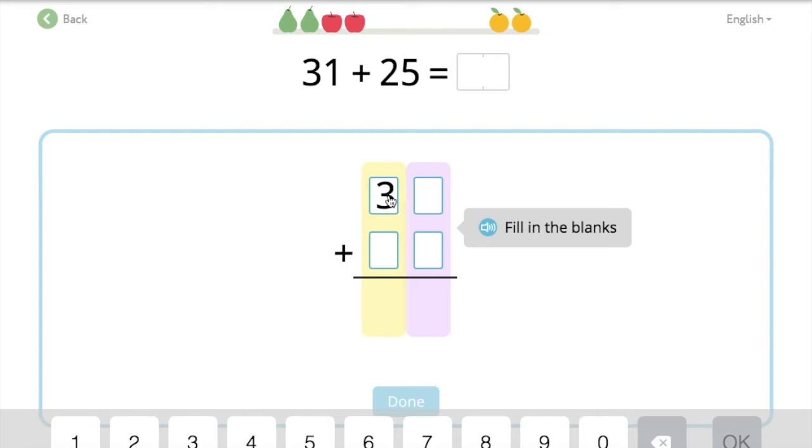31, 3 in the tens place, 1 in the ones place, plus 25. Which number's in the tens place in 25? Good job, 2. And in the ones place? 5. Nice work. Let's see. Press done.